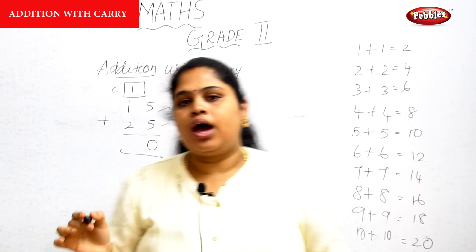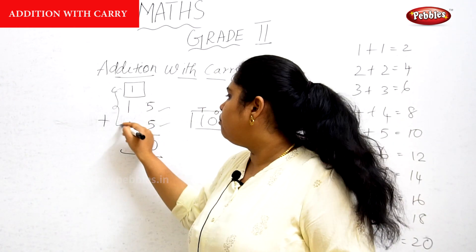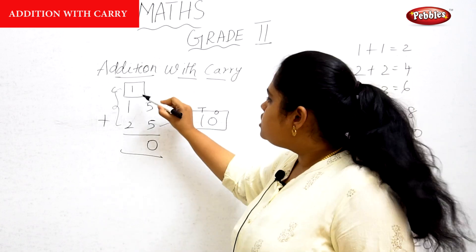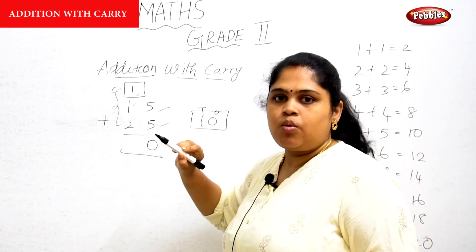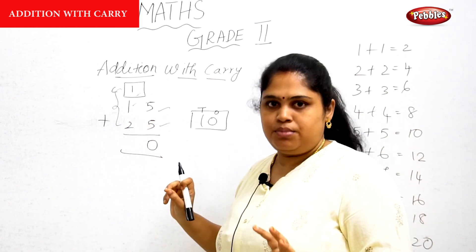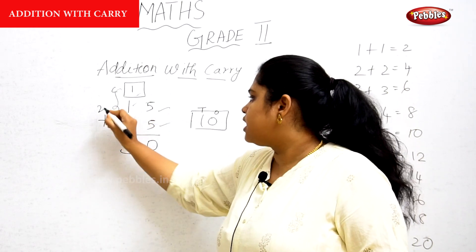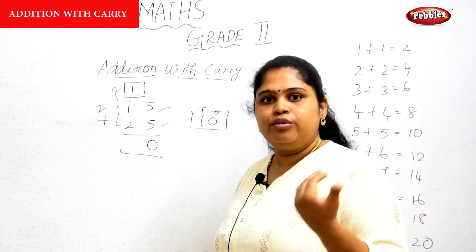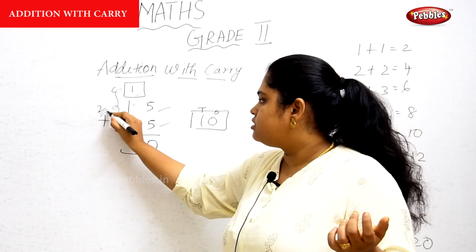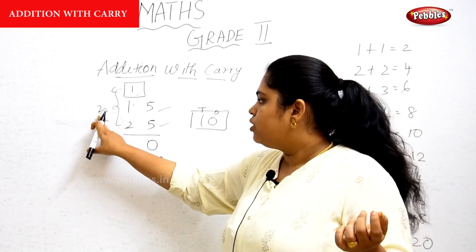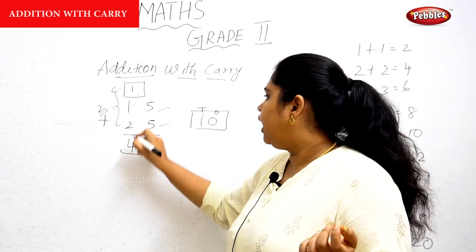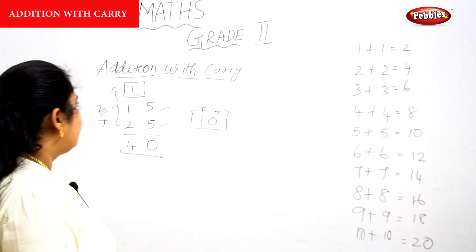Now it's time to add all three numbers. Time to add all three numbers. See here: 1 plus 1 — what is the answer? 1 plus 1 is 2. If you forget, just write 2 on this side so you never forget, because you have written it like this. So 1 plus 1 is 2, and 2 plus 2 is 4. You are going to add all three numbers.